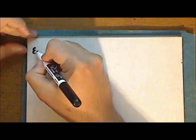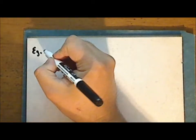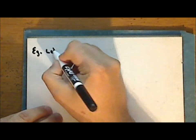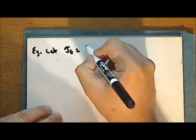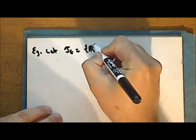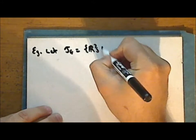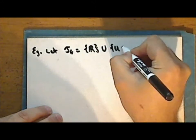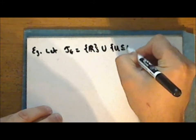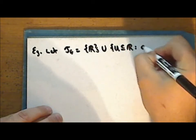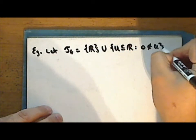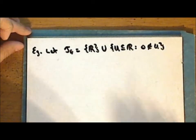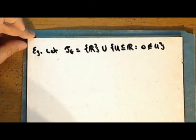The next example is really two examples in one. Let τ_E be the union of the entire set of reals with all subsets of the real numbers that do not contain the number zero. Then this is the excluded point topology on the reals with zero the excluded point.